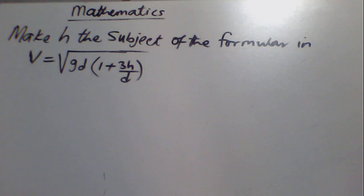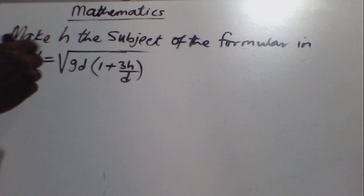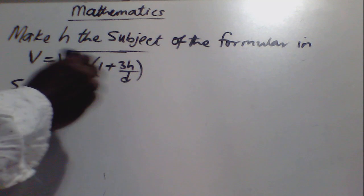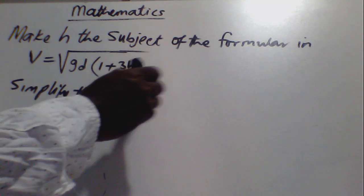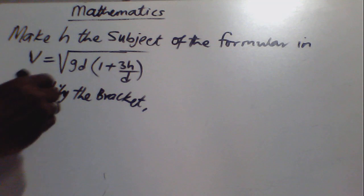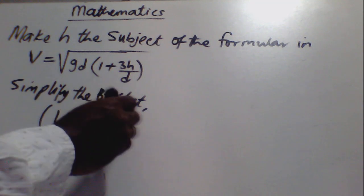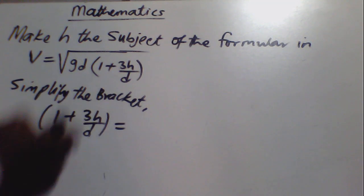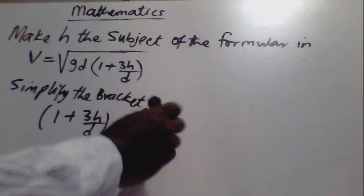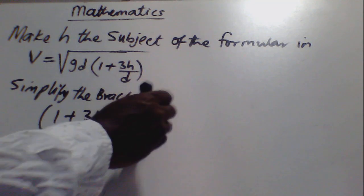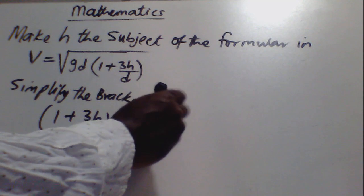The first thing you have to do in order to solve this type of problem is to simplify the bracket. How do you simplify the terms in the bracket? Find the LCM. The LCM of 1 and 3h divided by d is d. So d times 1 will give us d. d divided by d is 1, times 3h gives us 3h.